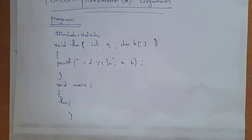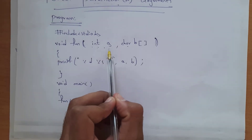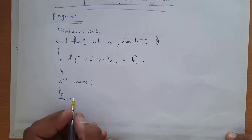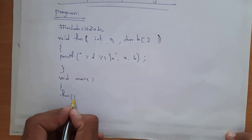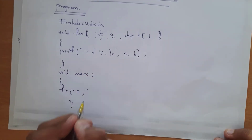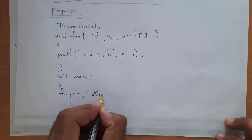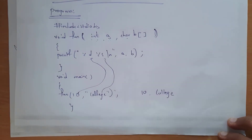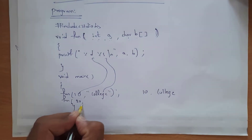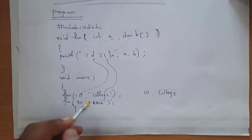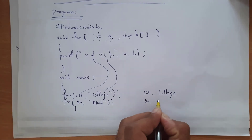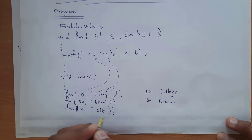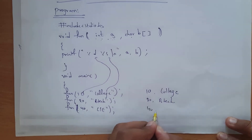Inside void main, call the function 'fun' and provide values: for the integer give 10, and for the string give 'college' in double quotations. Output will be 10 and college. Calling the function again with 20 and 'btec' gives output 20 btec. Calling it a third time with 40 and 'csc' gives output 40 csc. So the final output is: 10 college, 20 btec, and 40 csc.